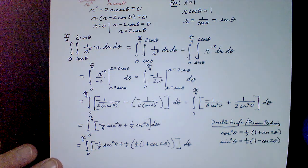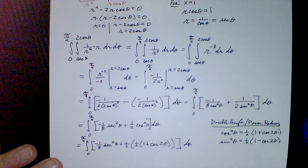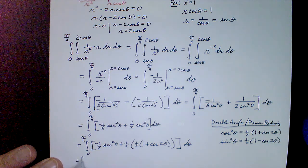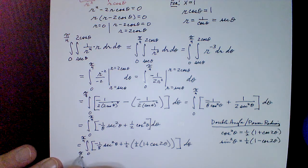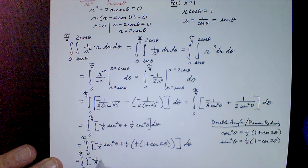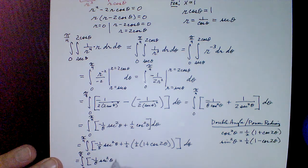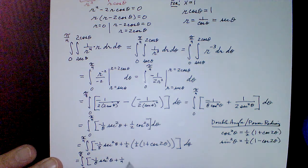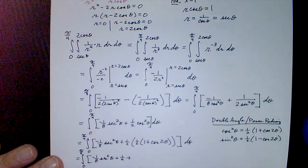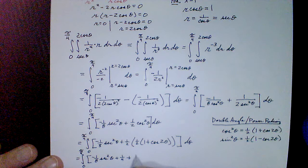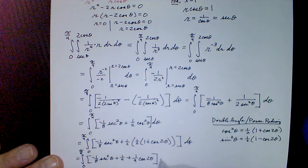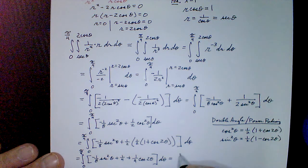Expanding, the integrand becomes −(1/8)·sec²(θ) + 1/4 + (1/4)·cos(2θ), all with respect to θ from 0 to π/4. Now we can integrate each term directly.